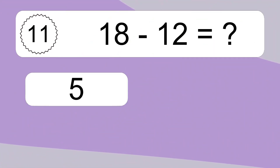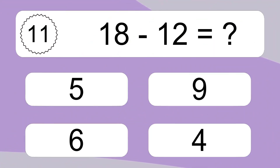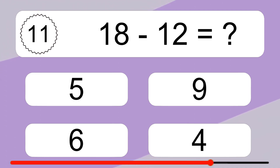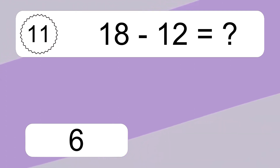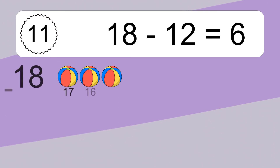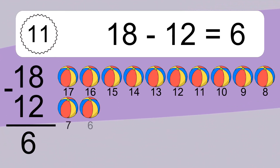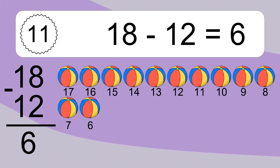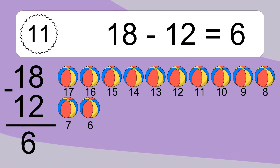18 minus 12 equals what? 18 minus 12 equals 6. Let's count it: 17, 16, 15, 14, 13, 12, 11, 10, 9, 8, 7, 6.